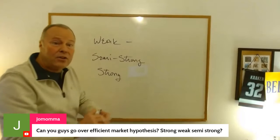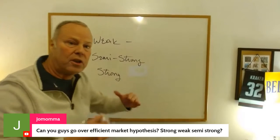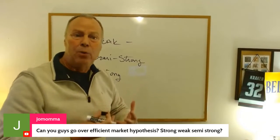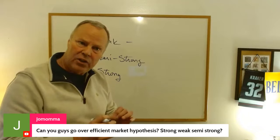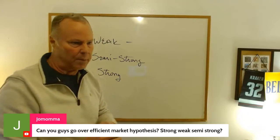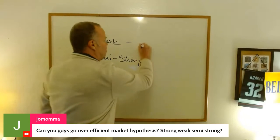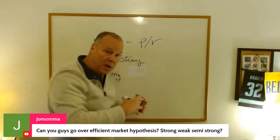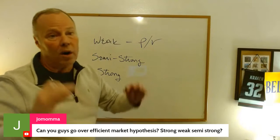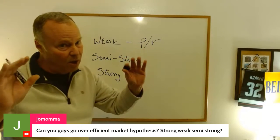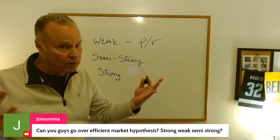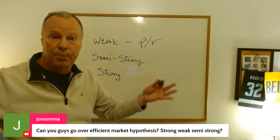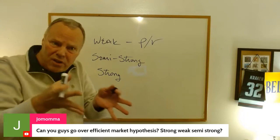Basically, it's just a pyramid of amount of information. The least amount of information — such as price and/or volume of an investment, sometimes called historical data, just a historical price — that's the weakest form.